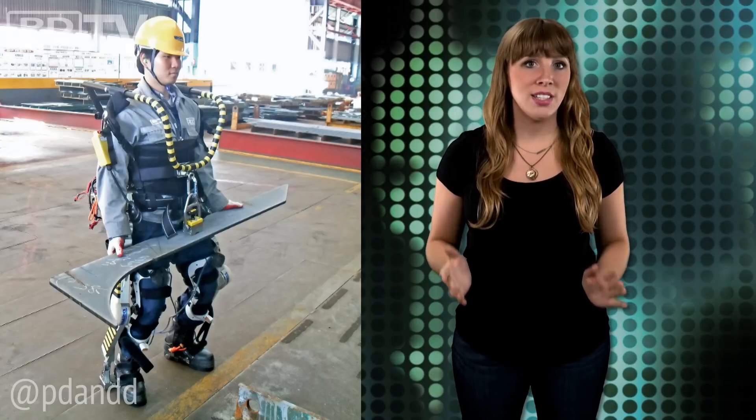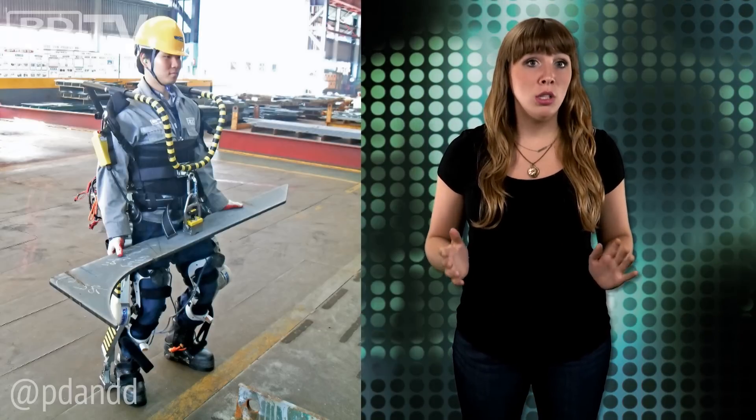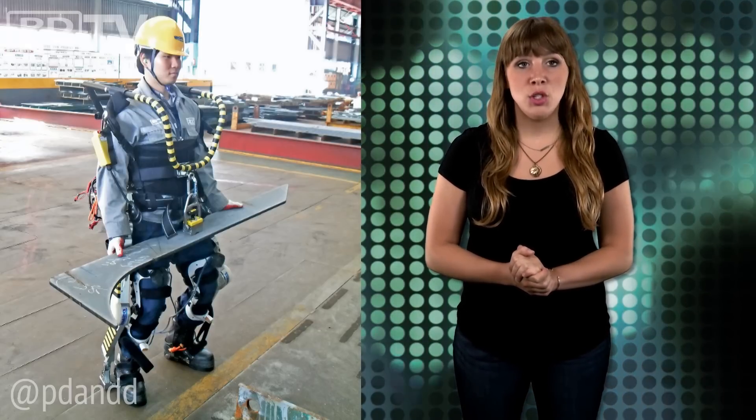According to New Scientist, the Robo Shipbuilder prototype suit is made from carbon, aluminum alloy, and steel, and weighs only 28 kilograms.